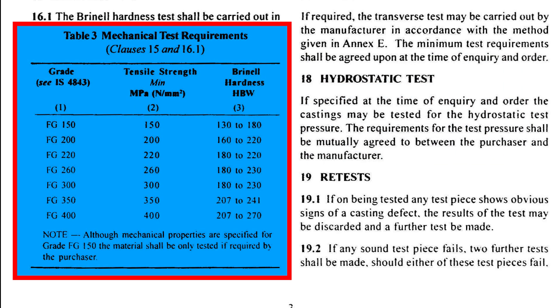For example, FG-150 refers to Grey Cast Iron with a minimum tensile strength of 150 MPa.